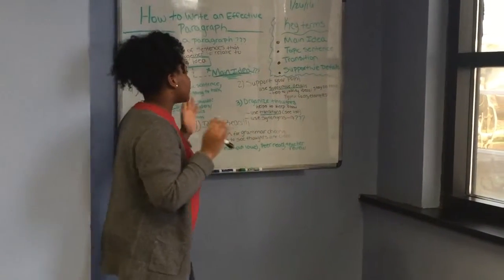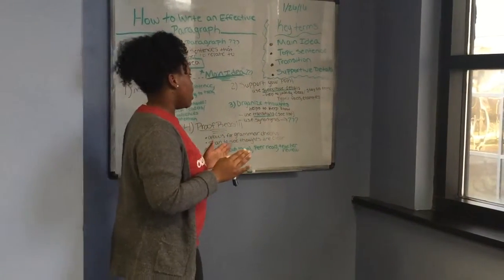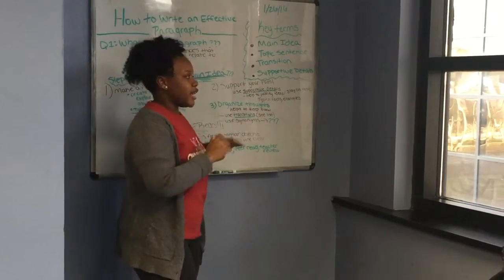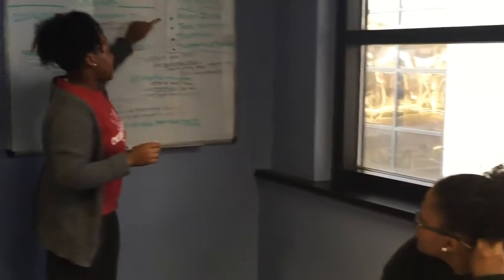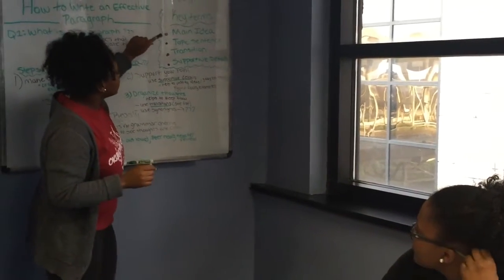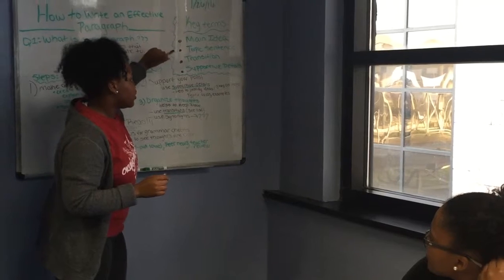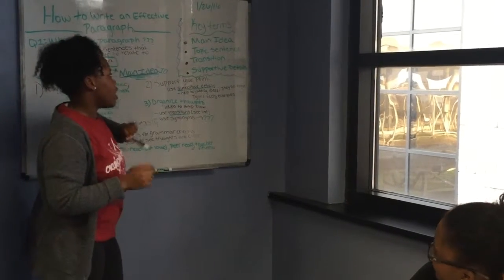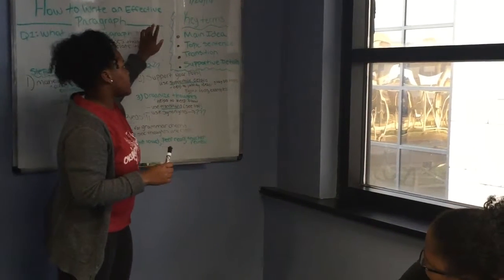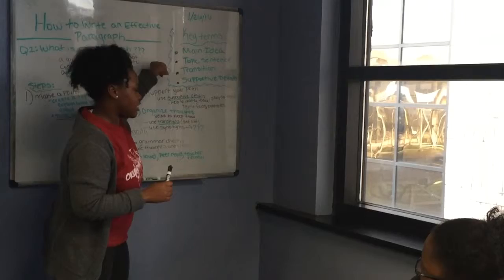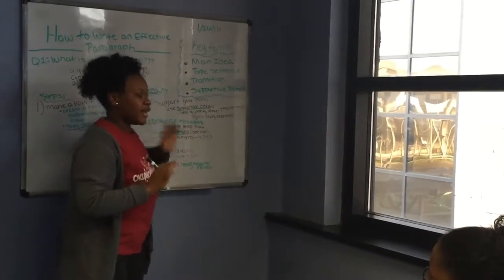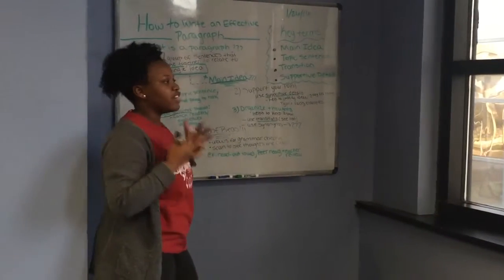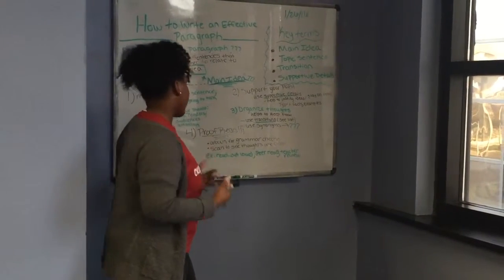In today's lesson, we're going to have key terms that we'll discuss: main idea, topic sentence, transition, and some form of details. We already discussed what a main idea was and what a topic sentence was, but now we're going to go into the steps of how to write an effective paragraph.